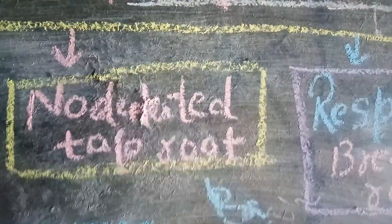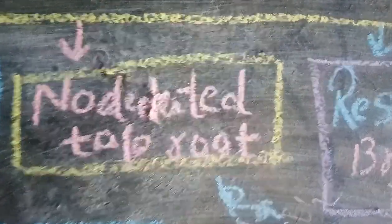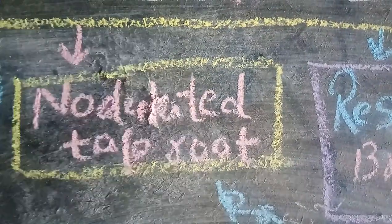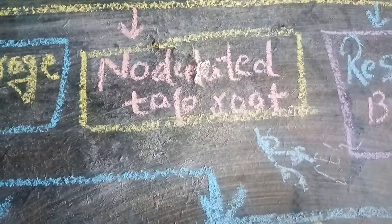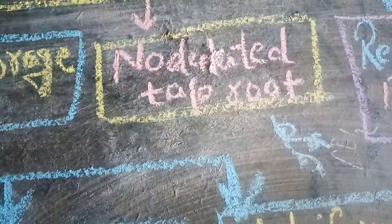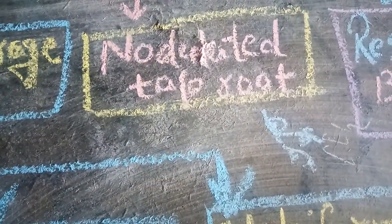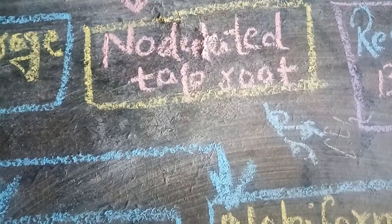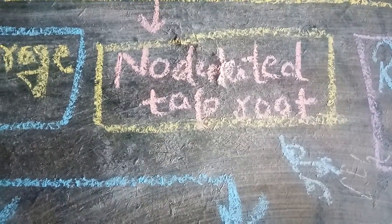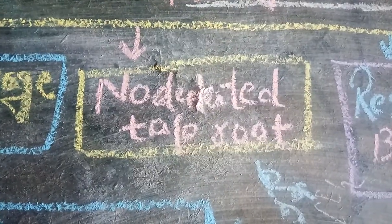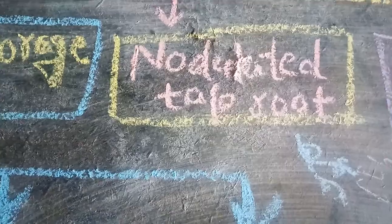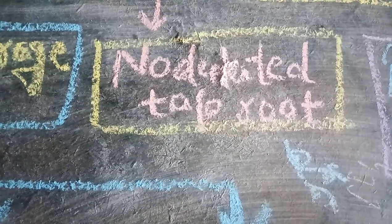Nodulated roots: nodules are present in the root of a certain family — the pea family, the Leguminosae family. The branches of the primary root bear small granules and nodules, giving a bead-like or granular structure. We call it the nodulated tap root.